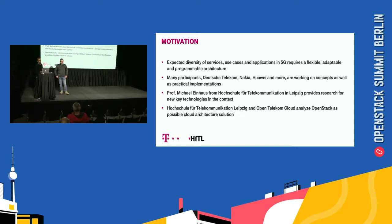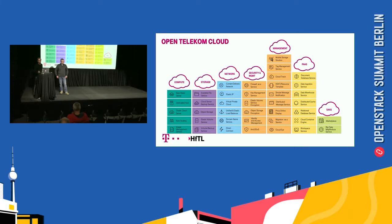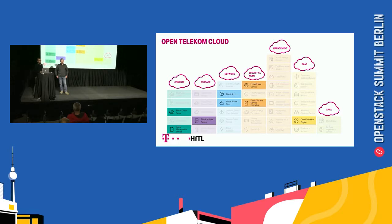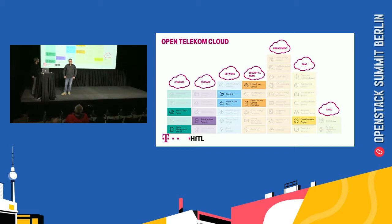The Hochschule for Telecommunications in Leipzig and the OpenTelecom Cloud analyze OpenStack as a possible cloud architecture. The OpenTelecom Cloud is an OpenStack platform which offers a wide range of services. For this project, we use services like the Compute Resource — that's the Elastic Cloud Server — the Image Management Service to provide some images, and the storage and network components for external IP addresses for the connection to the OTC.